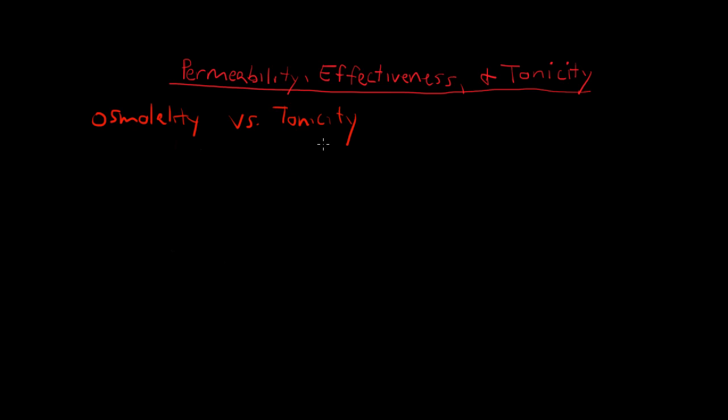Tonicity is a property of a solution with respect to a membrane and is determined by that reflection coefficient, the closer to 1 it is. That means an effective osmolyte exerts the full osmotic pressure. We saw that glucose exerted the full osmotic pressure and urea, the complete opposite, exerted no osmotic pressure across the membrane.